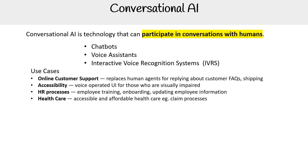Maybe in the US where claims are privatized it makes more sense. Internet of Things — IoT devices — so Amazon Alexa, Apple Siri, Google Home, and Cortana, though Cortana doesn't really have a particular device.